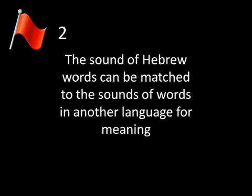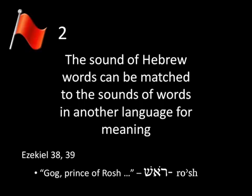Let's try another red flag. The sound of Hebrew words can be matched to the sounds of words in another language to produce meaning. Here's an example from Ezekiel 38 and 39. Some English translations have Gog, Prince of Rosh. The Hebrew word behind this transliteration of Rosh is in fact the Hebrew word that sounds like Rosh — that's the way it's pronounced.